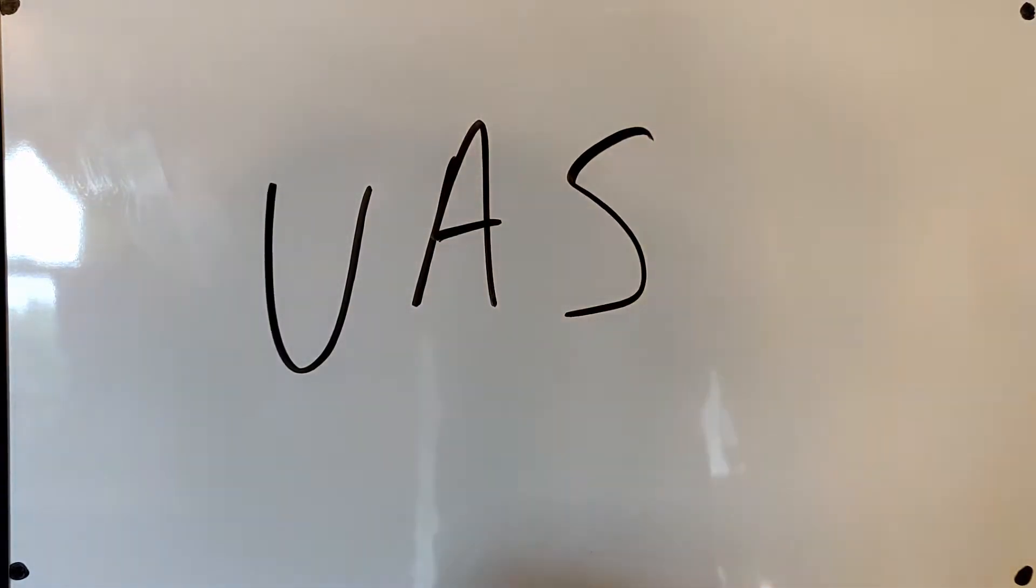UAS stands for Unmanned Aerial System. So basically includes the drone and everything else like the radio and the goggles.